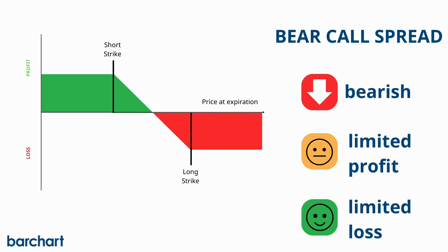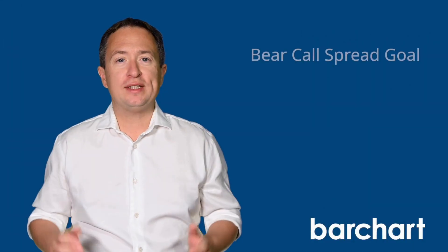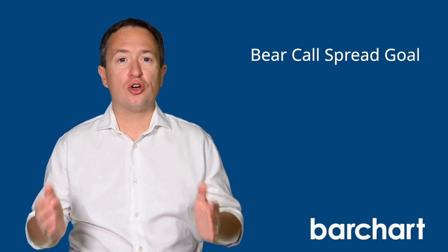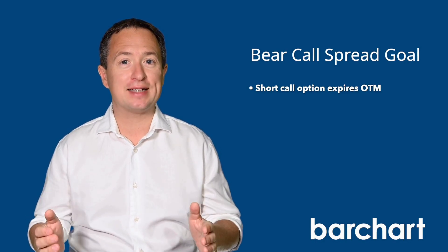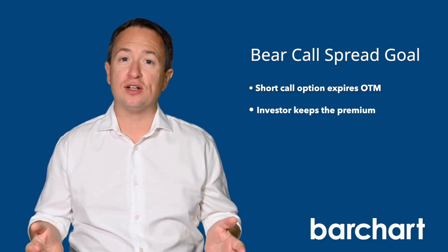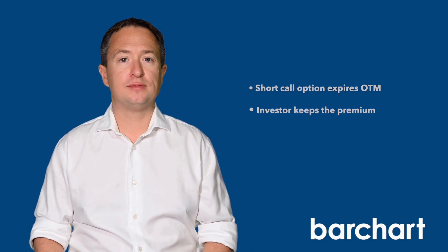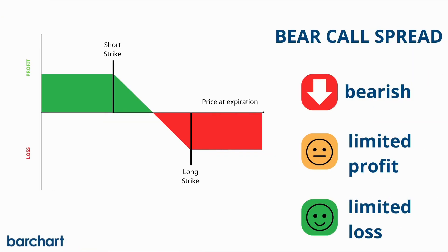Investors can profit from a moderately bearish outlook on the underlying asset while limiting potential losses. When selling a bear call spread, your goal is for the short call to expire unassigned or worthless, resulting in maximum profit. A bear call trade reaches its maximum loss condition if the underlying price ends above the long call strike at expiration.